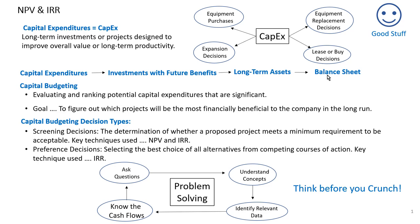It is important to understand that NPV and IRR analysis are core components of capital budgeting. Both are used to calculate whether a proposed project will be financially viable or not. NPV and IRR analysis are basically screening techniques which allow for the determination of whether a proposed project meets a minimum requirement to be acceptable. IRR can also be used as a preference technique when selection is based on choosing the best choice among all alternatives competing for funding.